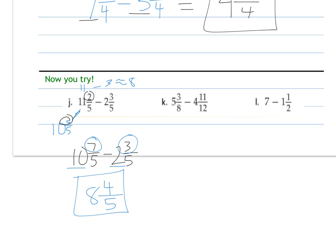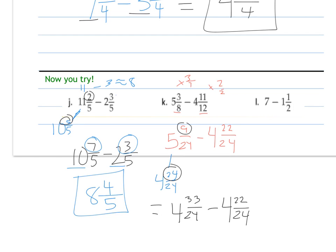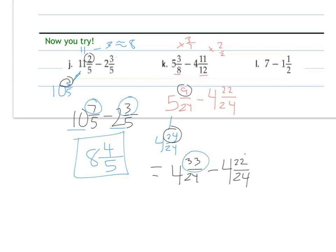Here I need a common denominator as well. We can change these to be 24s. So multiply this one by 3, this one by 2. So then I get 9 twenty-fourths minus 4 and 22 twenty-fourths. Still I need to regroup. So this 5 can become 4 and 24 twenty-fourths. Then I put that 24 and that 9 together. So this number is equivalent to 4 and 33 twenty-fourths minus 4 and 22 twenty-fourths. Now I'm actually able to subtract them. So I subtract, and I get 11 twenty-fourths.